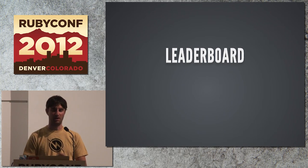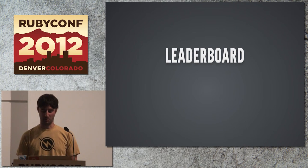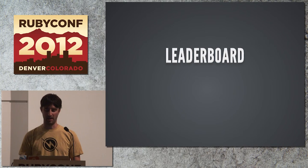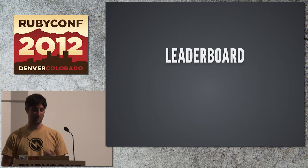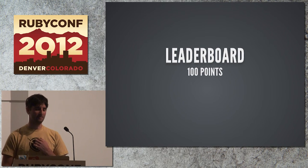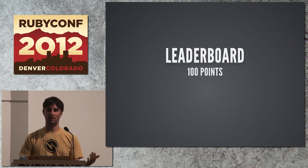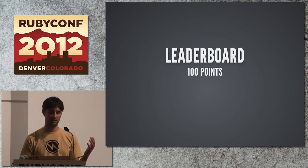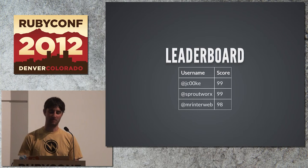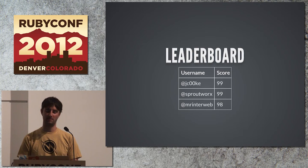One of the other examples I want to share is a leaderboard — one of the things Redis is supposedly great with. Let's say the competition is to get to a hundred points. I've got some users in my system: me and Sprout are at 99 points and Sean is at 98. The approaches to persist this in any other Ruby implementation would be to use Redis's sorted set, a relational database, or Ruby's built-in sorted set.